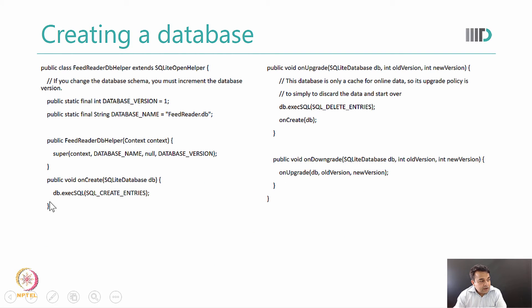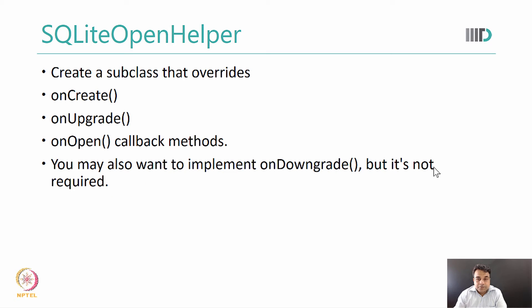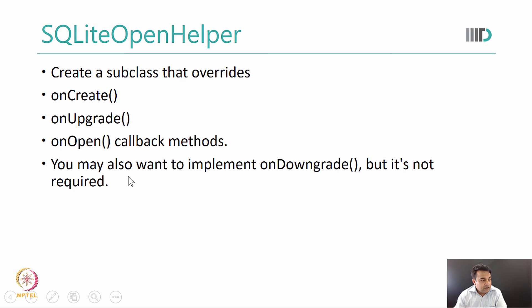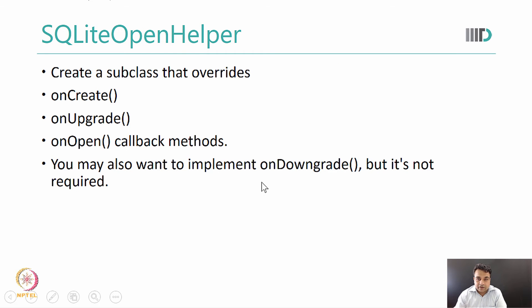Similarly, we can override the methods onUpgrade and onDowngrade, which upgrade and downgrade our database. To summarize: we create a subclass that overrides onCreate, onUpgrade, and the open callback methods. Our class FeedReaderDbHelper is a subclass of SQLiteOpenHelper. That's all that is needed to create a SQLite database in Android.